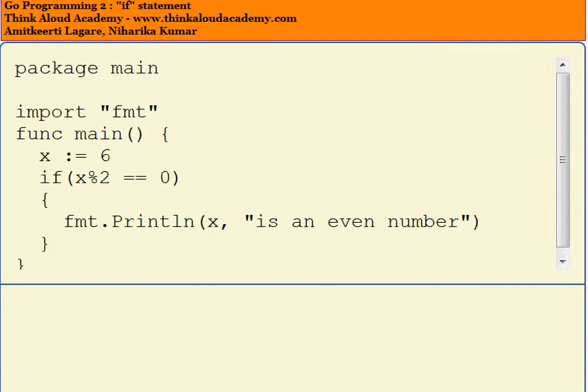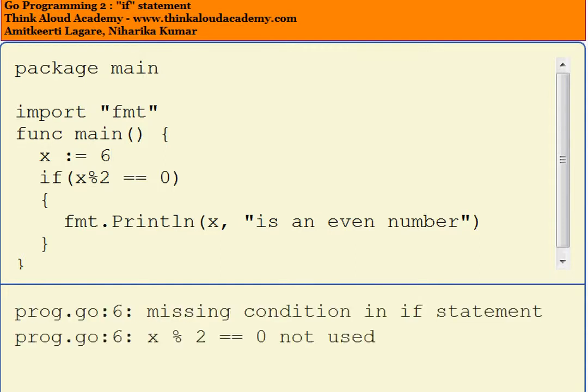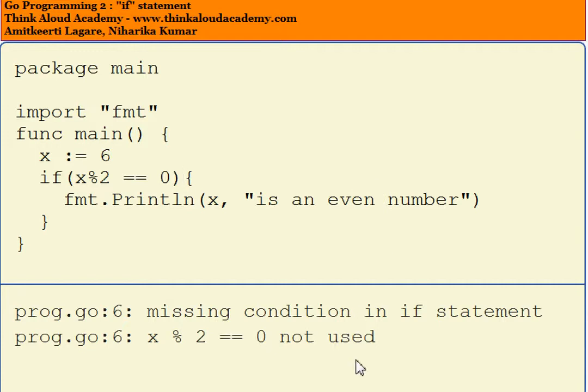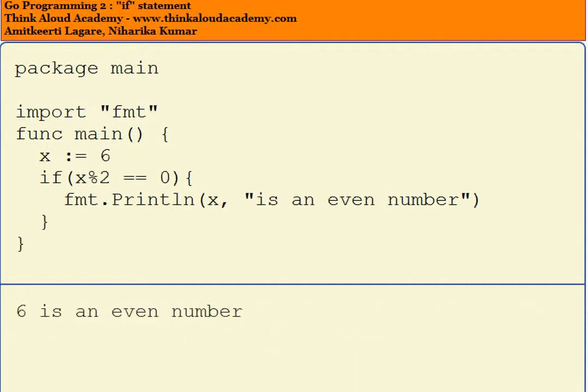So, there is an error in this code. When we run, we will have a look at it. What it says is missing condition in the if statement. We will just bring it up and run. What you see is just like main, the opening brace has to come along with the if statement or it will give you an error saying it cannot compile. This is the first thing - the opening brace has to come on the line where if is written.